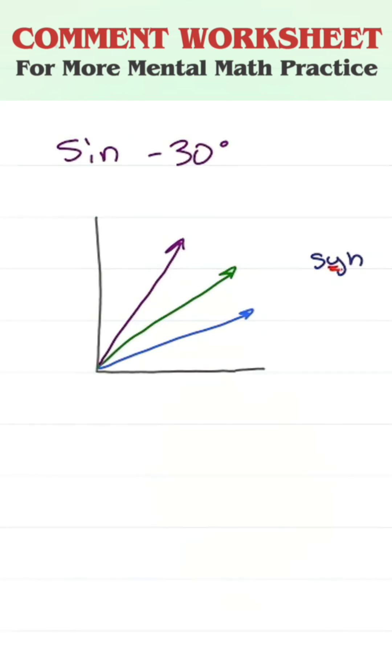Sine spelled with a y tells me I'm looking at the y-axis, and in this case, the height of my line going from zero degrees at zero all the way up to 90 degrees at one.